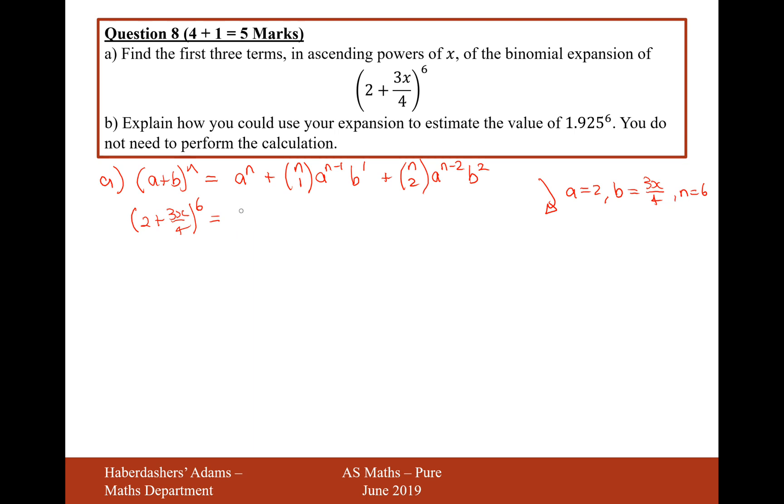So let's substitute that in then. So it's going to be 2^6 plus (6 choose 1) times 2^5 times (3x over 4)^1 plus (6 choose 2), 2^4 times (3x over 4), all being squared.